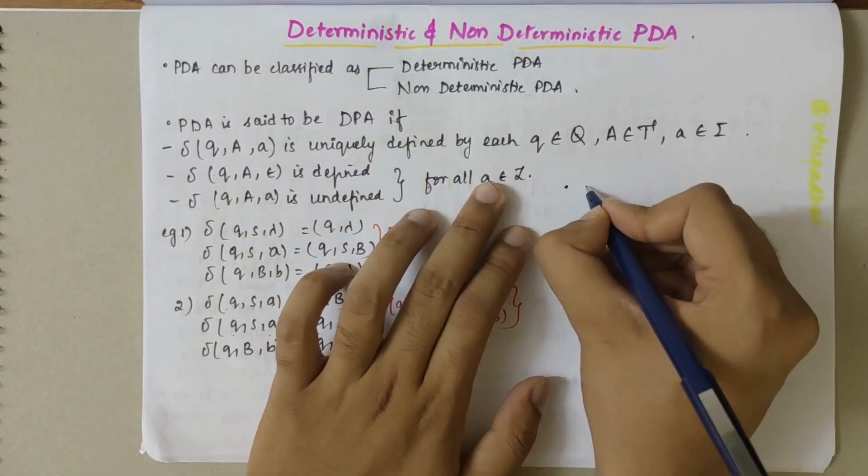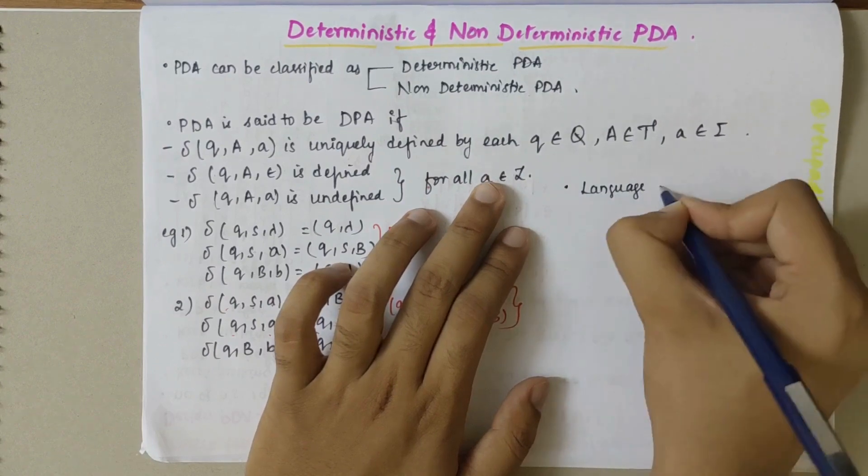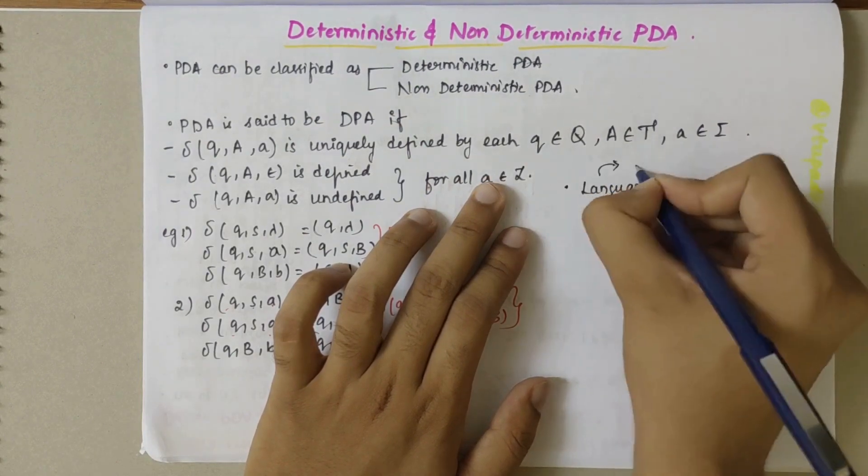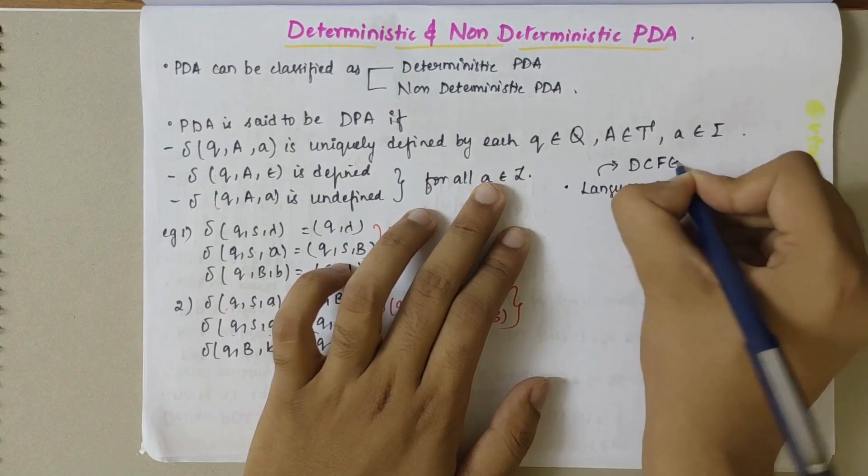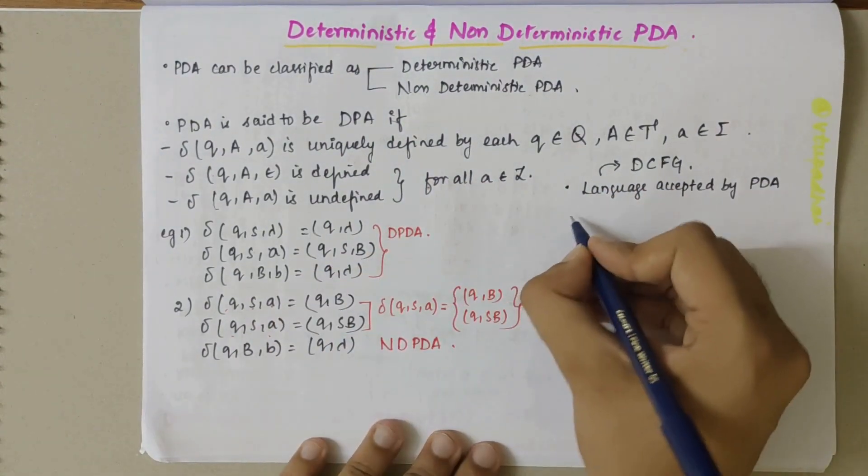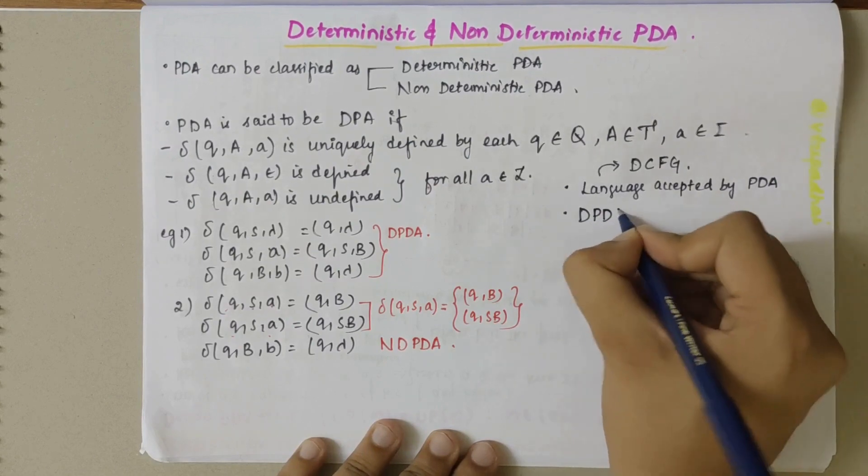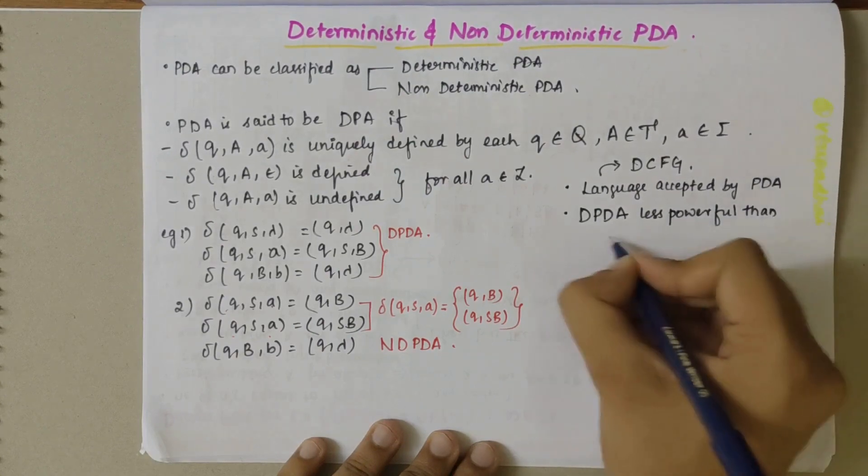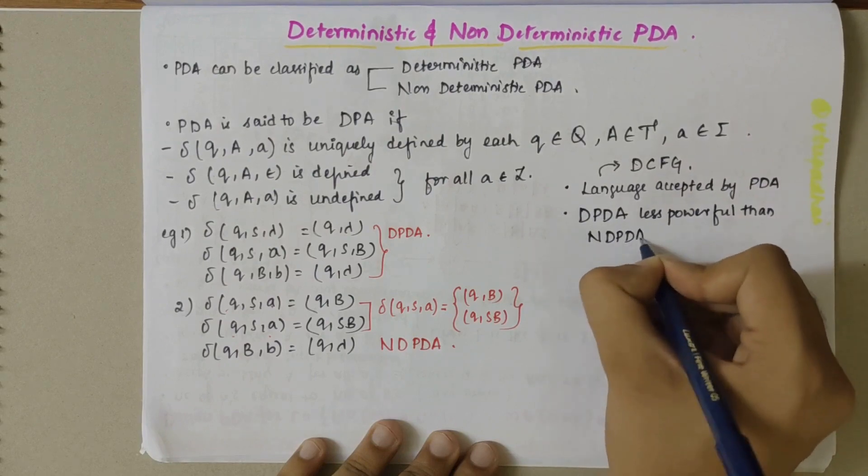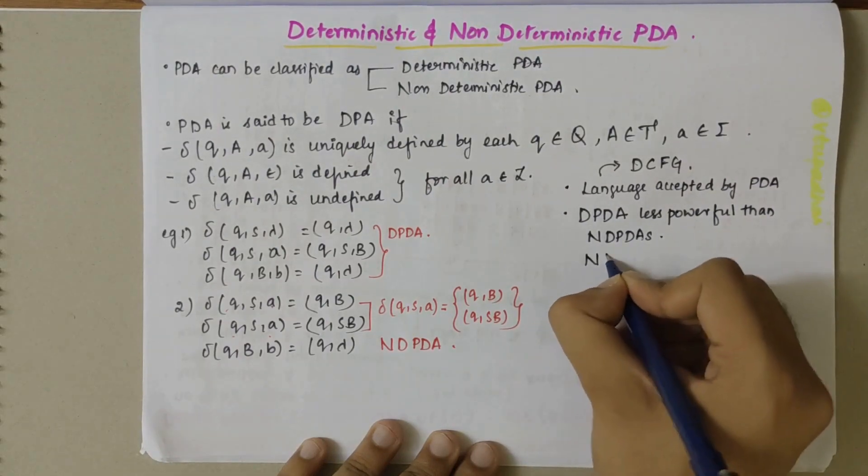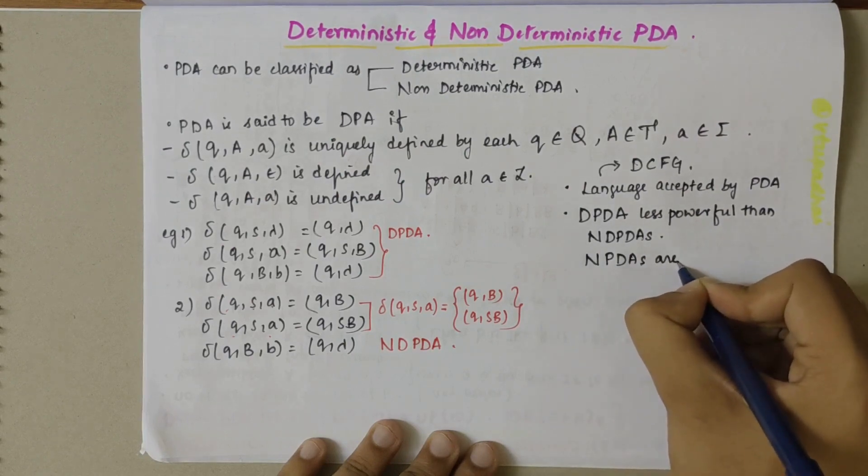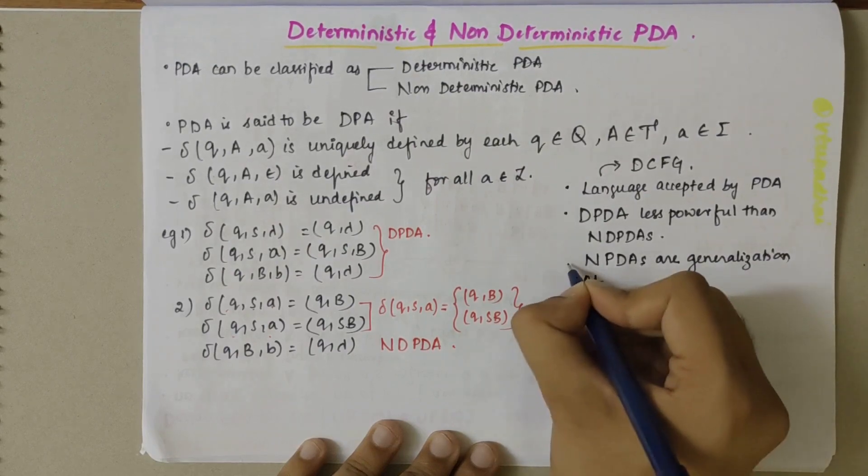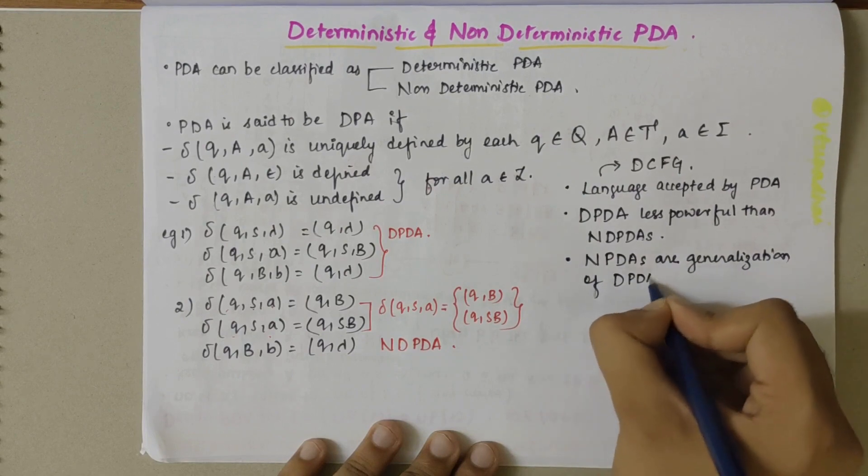We need to remember that the language accepted by PDA is deterministic context-free grammar. We should know that deterministic PDA are less powerful than non-deterministic PDAs but non-deterministic PDAs are the generalization of deterministic PDAs.